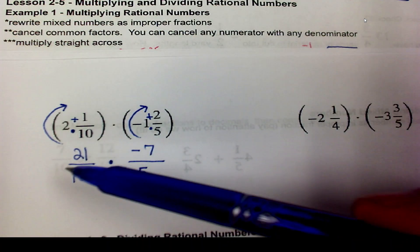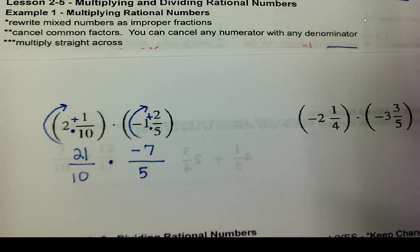So now we're just left having to multiply straight across. We'll get negative 147 on top because 21 times 7 is 147, negative, and 50 on the bottom.